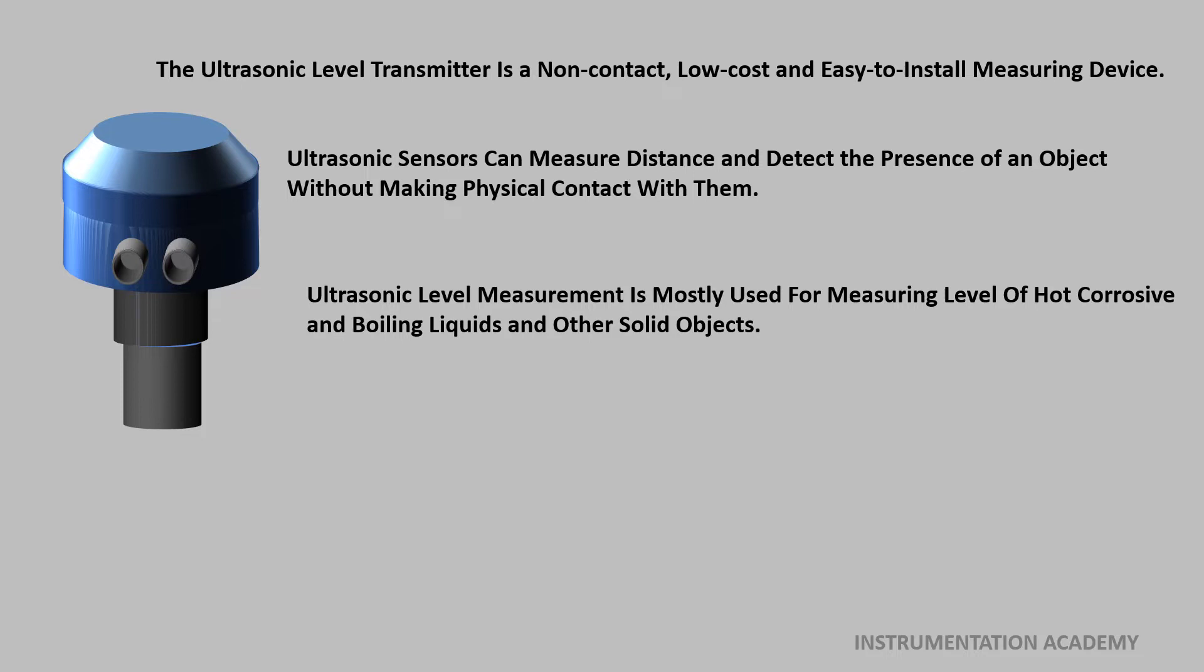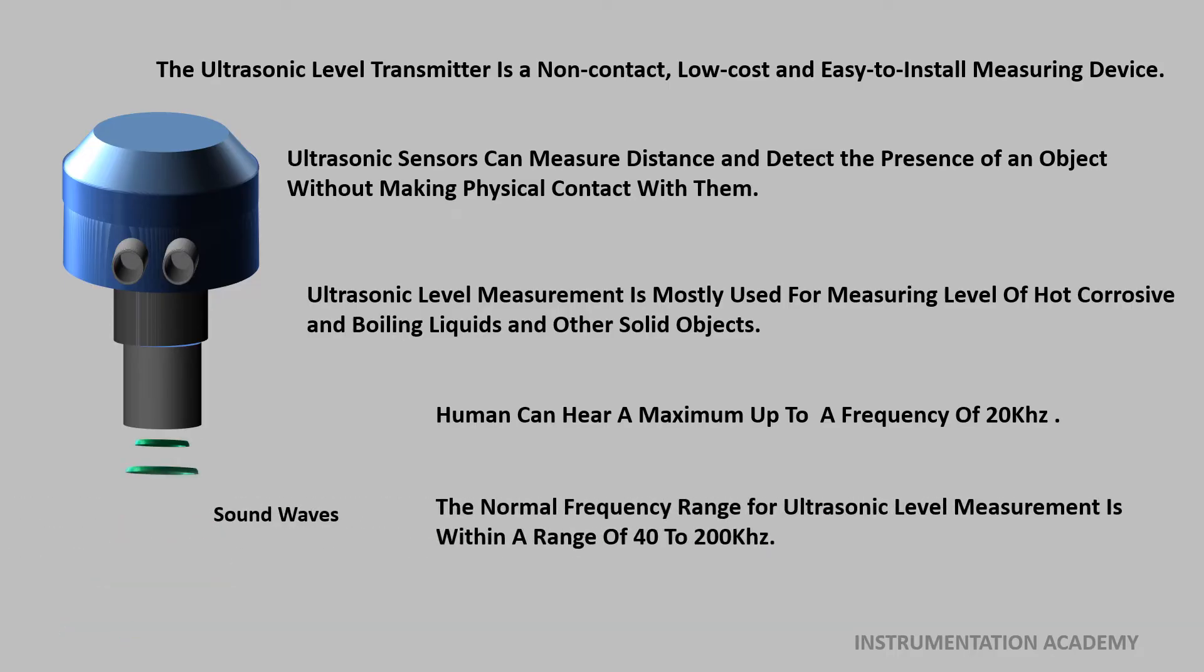They use sound waves above human hearing range. Human can hear maximum up to a frequency of 20 kHz. The normal frequency range for ultrasonic level measurement is within a range of 40 to 200 kHz.